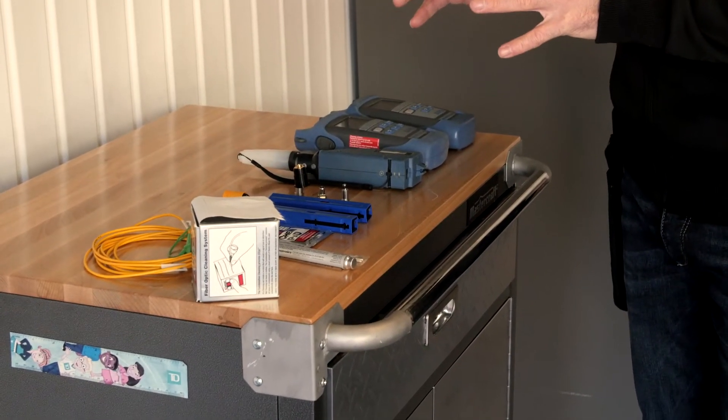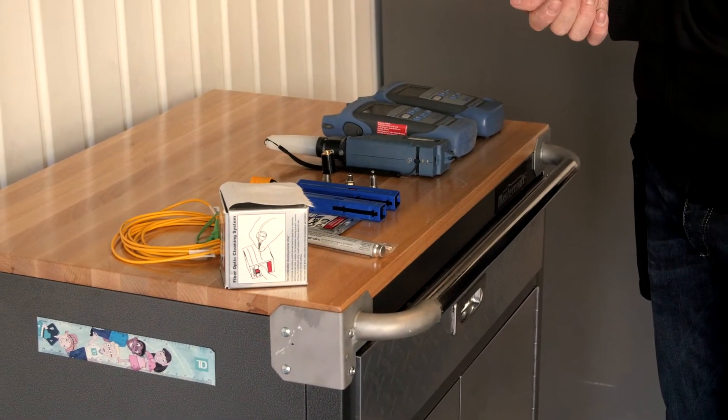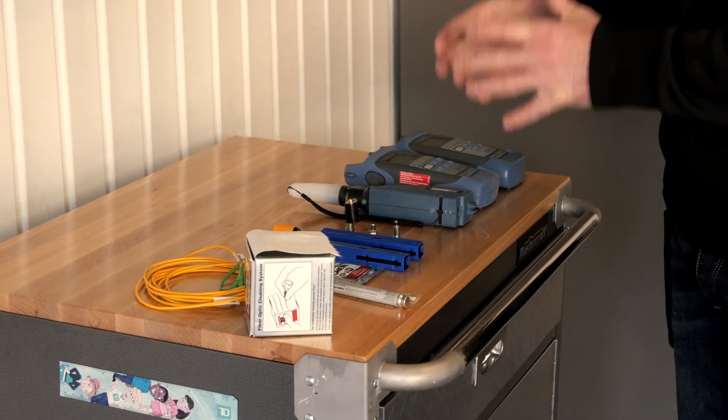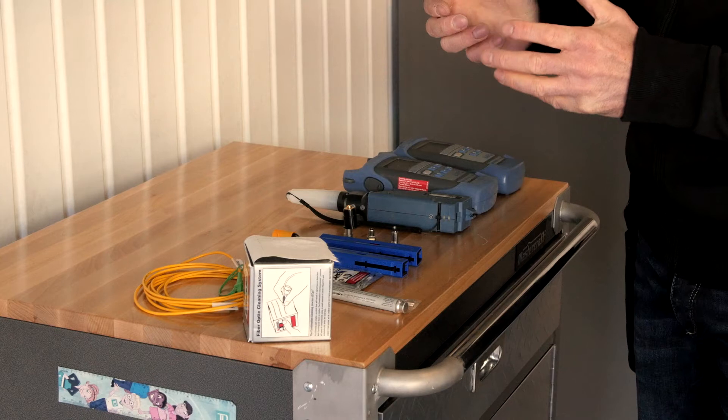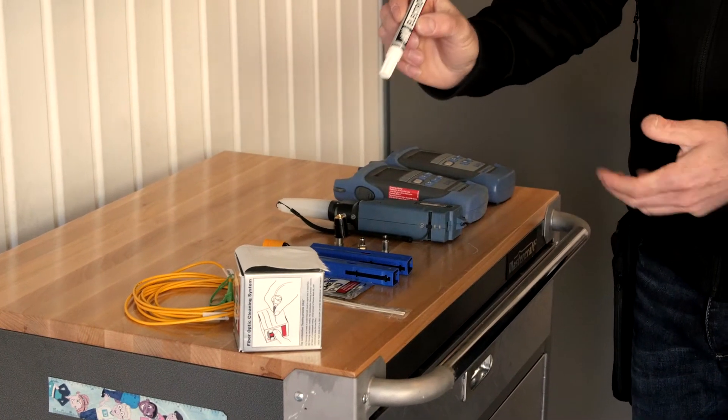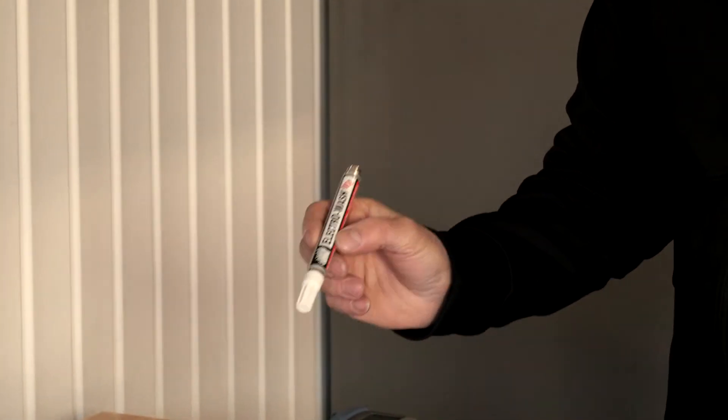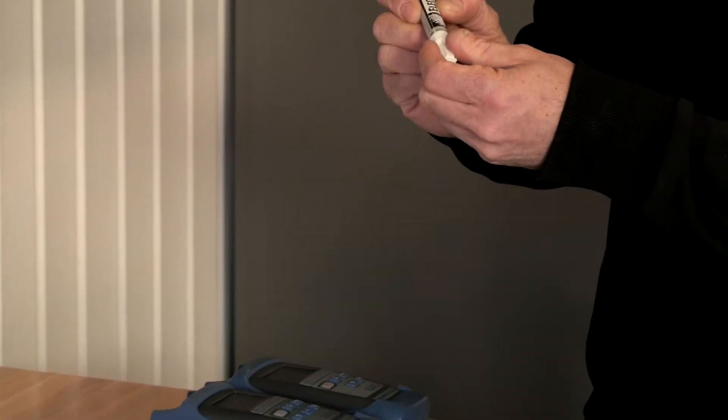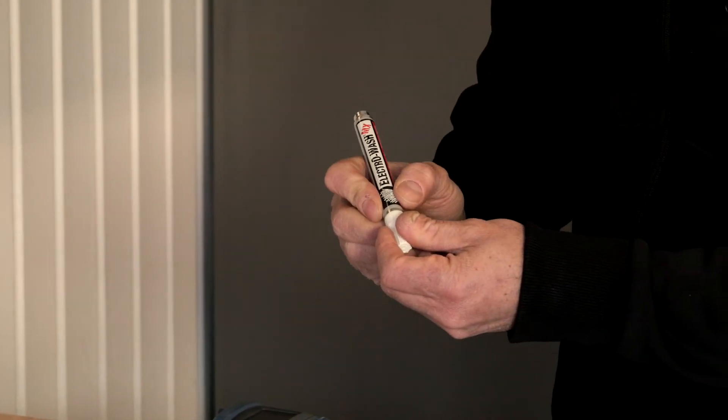I'm going to speak a little bit about cleaning. There's two methods that can be used: the hybrid method and the dry method. The hybrid method will involve a solvent. This is an example of a solvent you can have on the market. If you use a solvent like this, it's very important to dry the connector after.